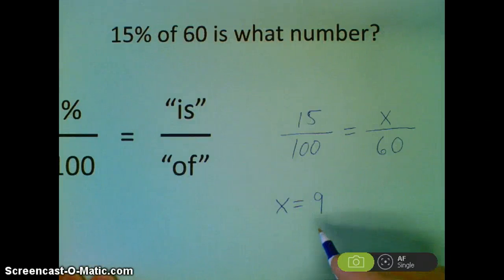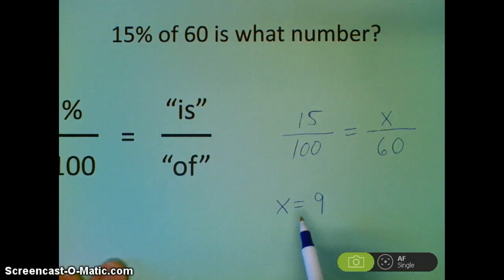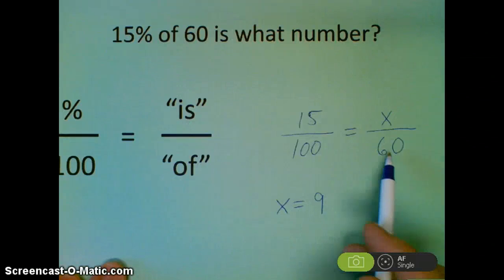So I ask myself, is that a reasonable answer? Could 9 be 15% of 60? Well, I know 0% of 60 would be 0, and 50% of 60, that would be half of 60, so that would be 30. So yeah, 9 is pretty reasonable. That makes sense to me.